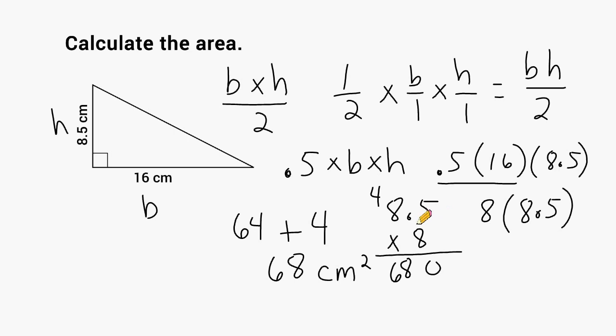And because we only have one digit after this decimal here, the same is true in our answer, so we put it here, so we also have one digit after our decimal. And we have verified that the area is 68 square centimeters.